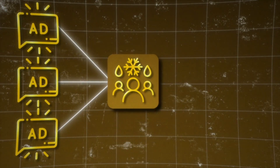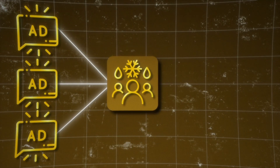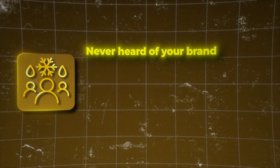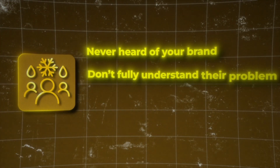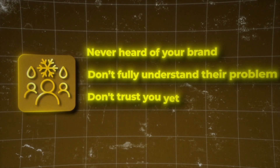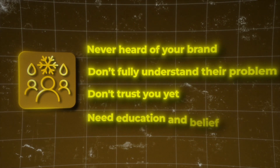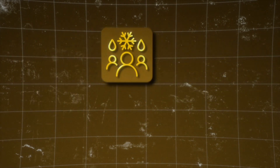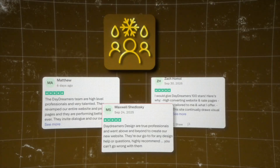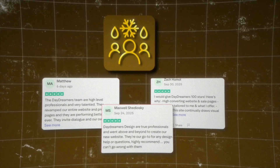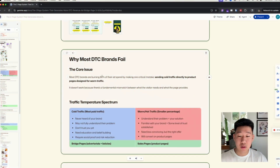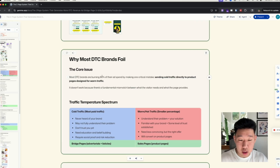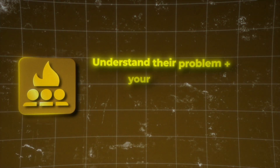Cold traffic — which is most of your meta ads — has never heard of your brand. They don't fully understand their own problems, they don't trust you yet. They need education and belief building, and require more trust, social proof, and risk reduction. This is why we use bridge pages like an advertorial or listicle.